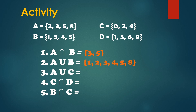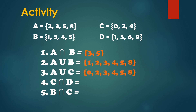Next, A union C — so union: {0, 2, 3, 4, 5, 8}. So A union C is equal to {0, 2, 3, 4, 5, 8}. Next, C intersection D — meron bang intersection? Wala. Wala silang common element, ibig sabihin walang intersection. So this is an empty set. Next, B intersection C — meron bang common element? Meron — that is 4. So B intersection C is equal to {4}.